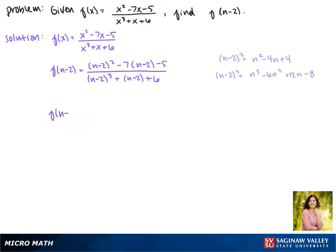This gives us f of n minus 2 equals n squared minus 4n plus 4. Now by distributing the negative 7, we get minus 7n plus 14 and minus 5. Now in the denominator, we get n cubed minus 6n squared plus 12n minus 8 all from our first term. And now we have plus n minus 2 plus 6.